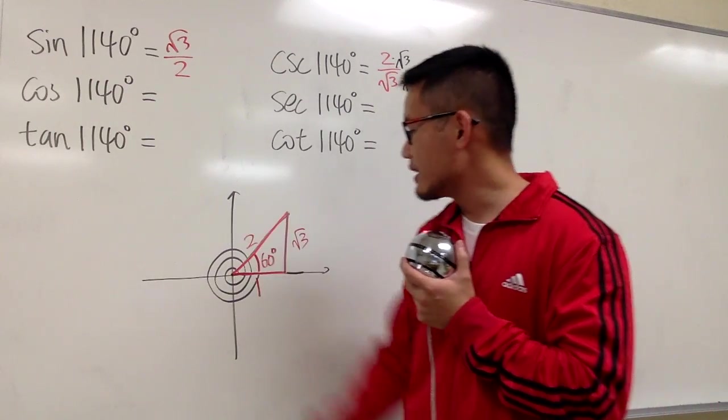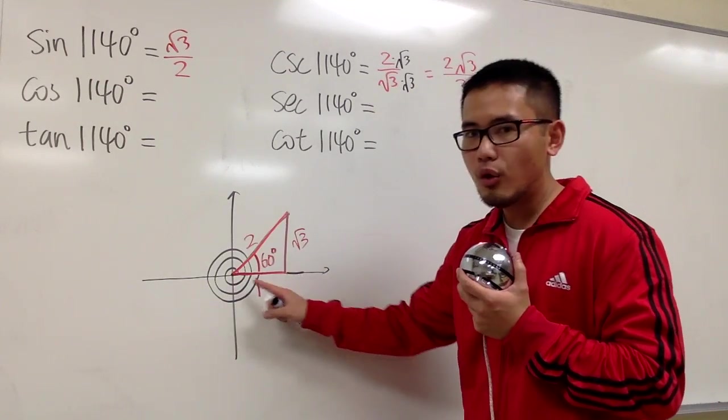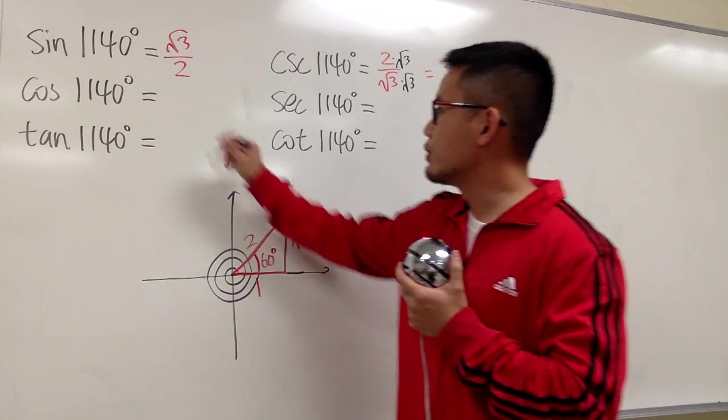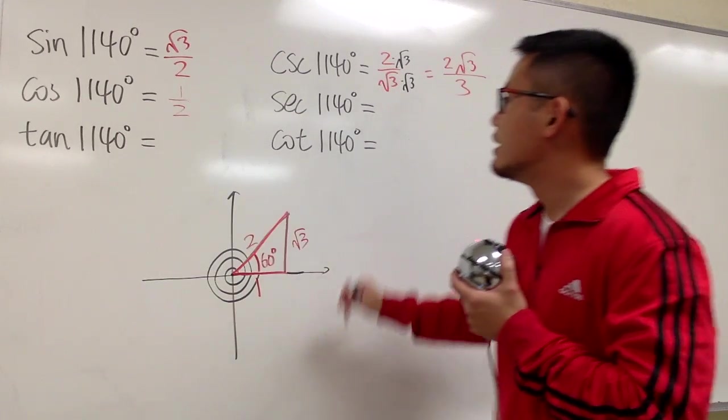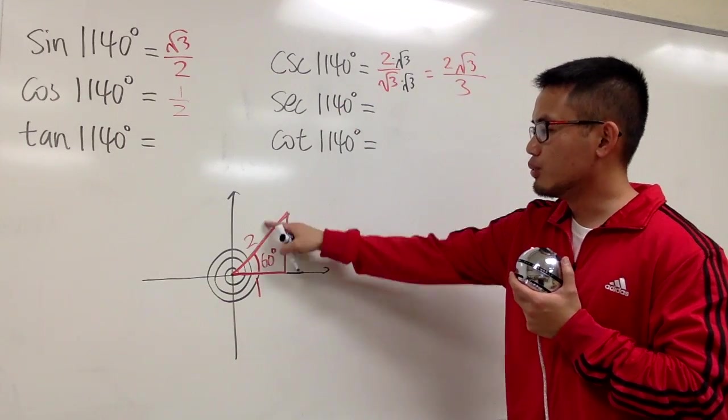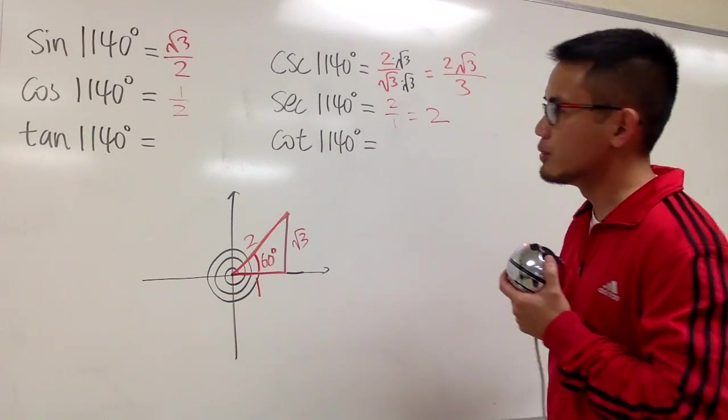And then for the cosine, you do x over r, which is 1 over 2. That's just 1 half. For secant, it's just going to be 2 over 1, right? So, let's put on 2 over 1, which you know is 2.